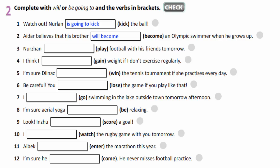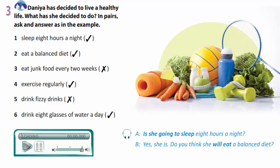Exercise three. Dania has decided to live a healthy life. What has she decided to do? You are to ask questions and answer them as in the example. Listen: Do you think she will eat a balanced diet? Yes, I think she will. Is she going to eat junk food every two weeks? No, she isn't. Is she going to exercise regularly? Yes, she is. Do you think she will drink fizzy drinks? No, she won't. Is she going to drink eight glasses of water a day? Yes, she is.